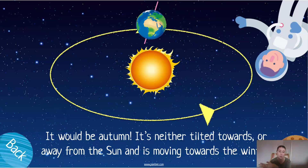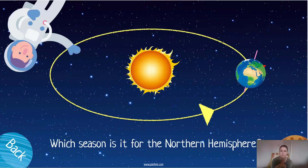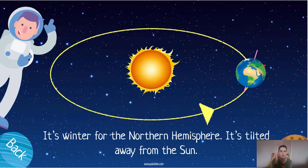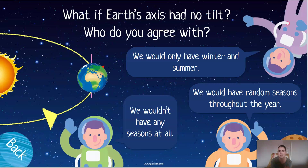Moving towards being colder — and what season would it be for the northern hemisphere, the red triangle? It's got to be winter, because now it's tilted at its furthest point away from the sun. But what if the Earth's axis had no tilt? Consider three options: would we only have summer and winter, would we have random seasons throughout the year, or would we have no seasons at all?